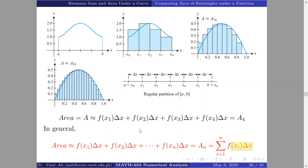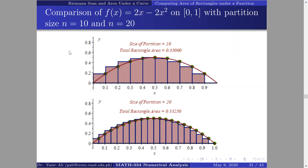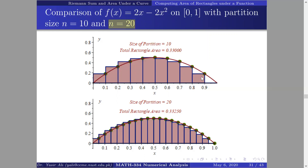Let's compare the area under the curve for the function 2x − 2x² over the interval [0, 1] with partition sizes n = 10 and n = 20. With n = 10 I create ten sub-intervals, compute the area of each rectangle, and sum them up. With n = 20 I have twenty rectangles, compute each area, and sum them to get the area under the curve.